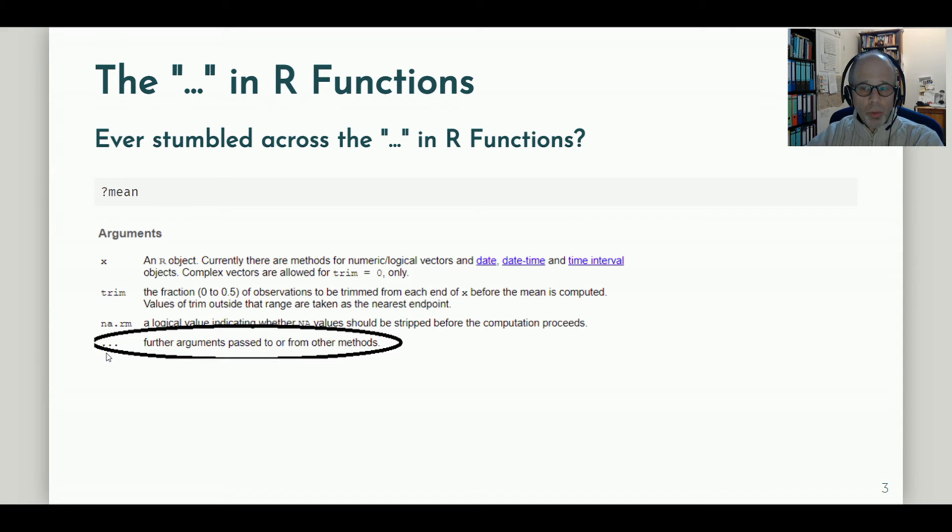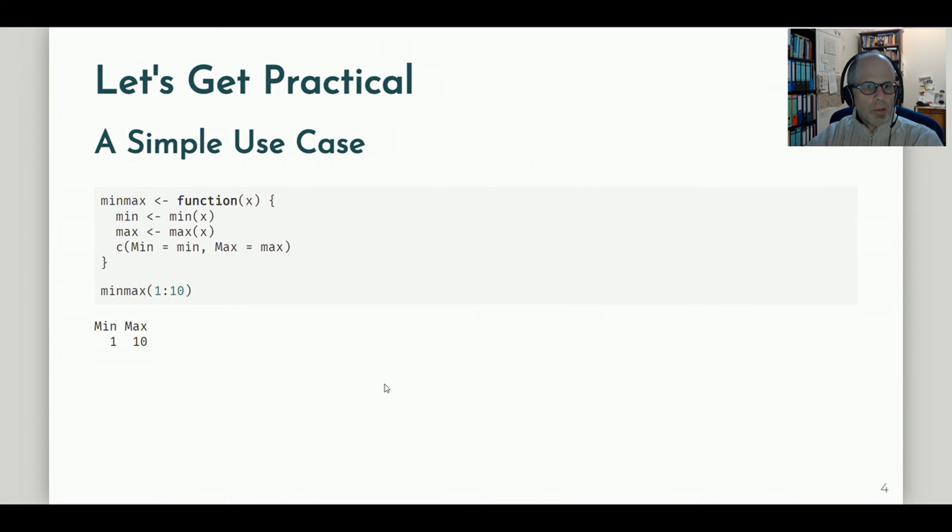But we don't want to be too theoretical. We do our own example and see how the dot dot dot notation can be useful. So a simple use case. We write a simple function. I call it minmax and it just calculates the minimum and the maximum.